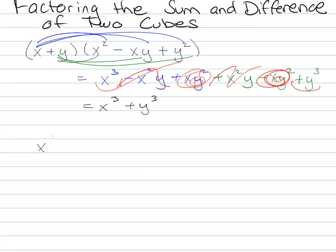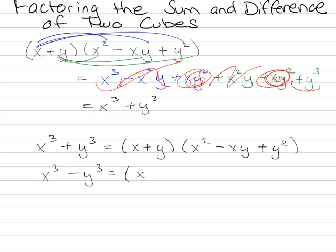So that gives us our next property, formula, thingy. That x³ plus y³ is equal to x plus y, x² minus xy plus y², and then similarly we could find that x³ minus y³ was equal to x minus y, x² plus xy plus y².